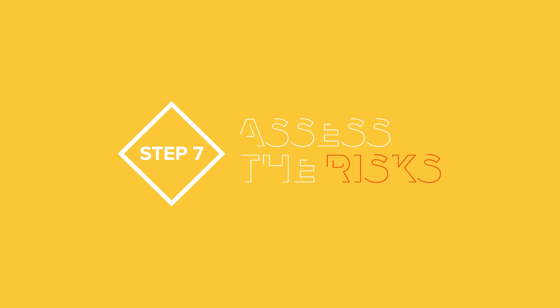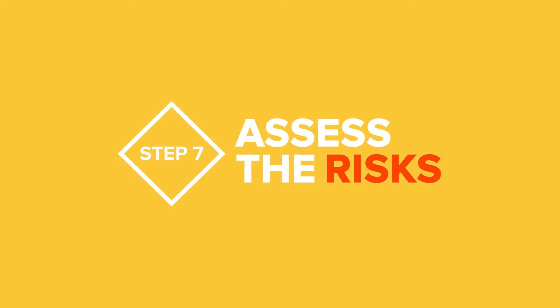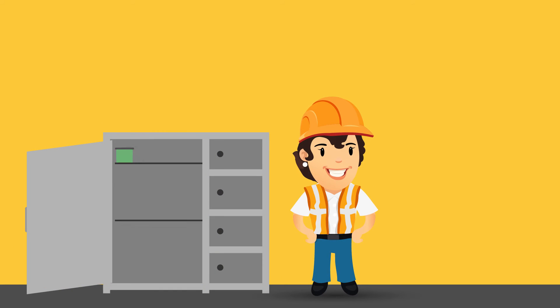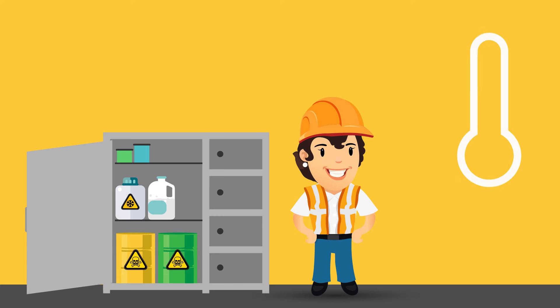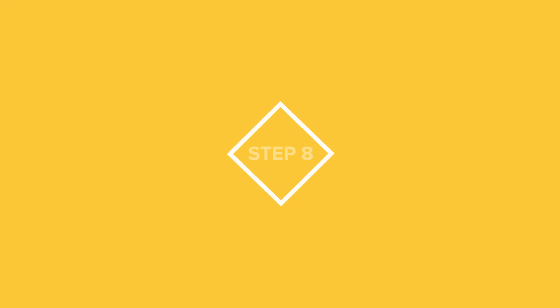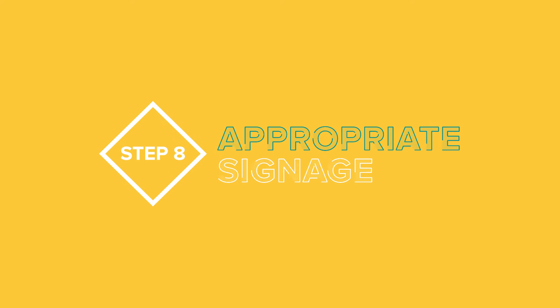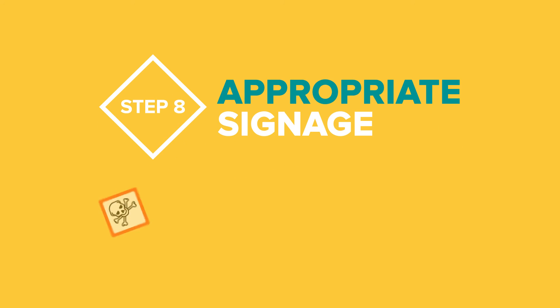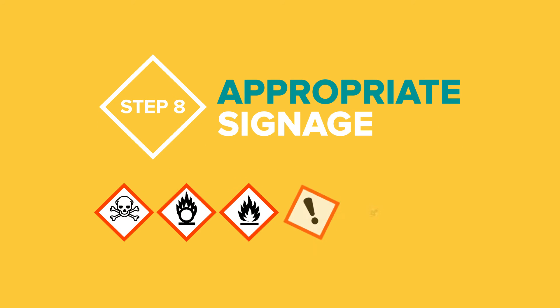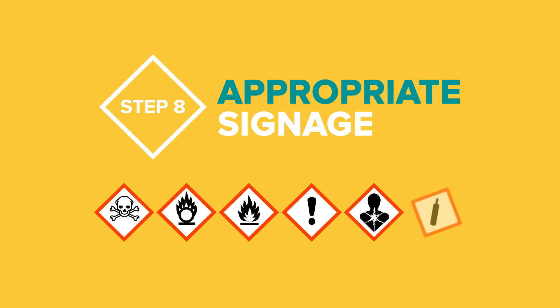Step 7: Assess the risks associated with chemicals used and stored and develop safe work procedures for substances with a high or extreme rating. Display appropriate signage highlighting the hazardous nature of chemicals used or stored on site.